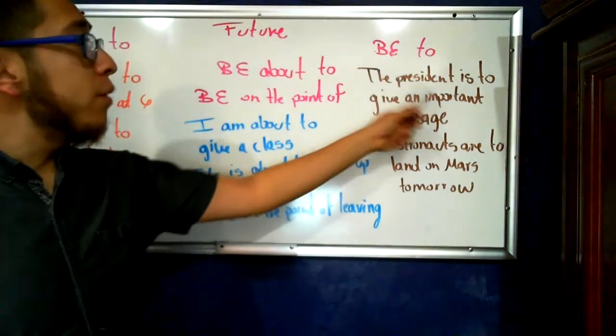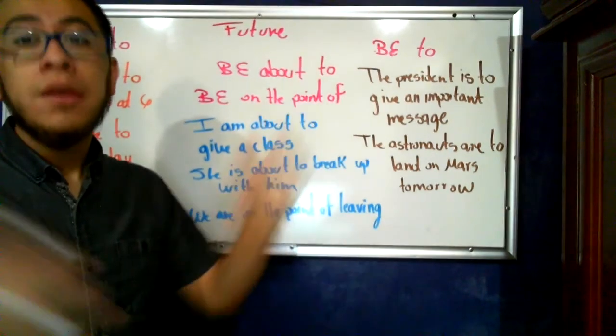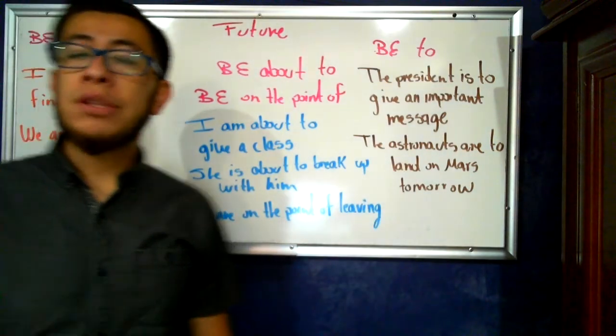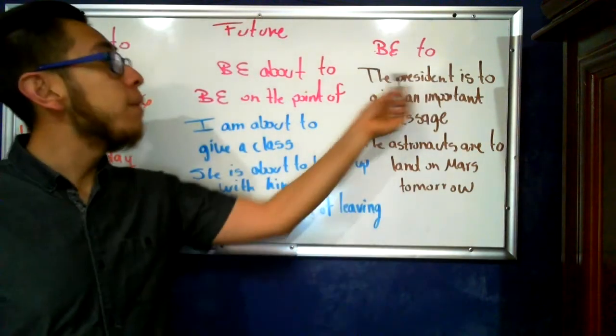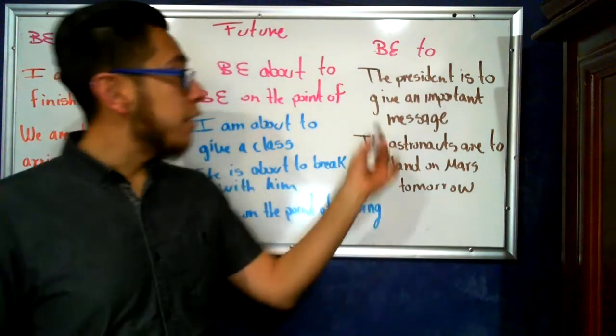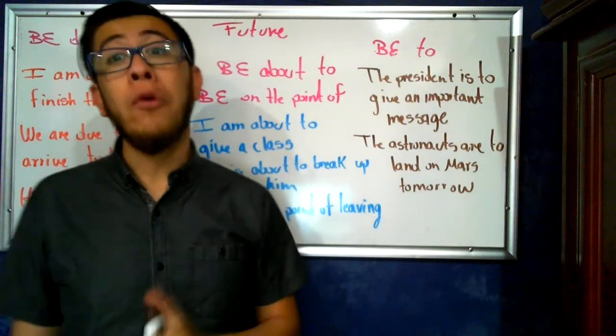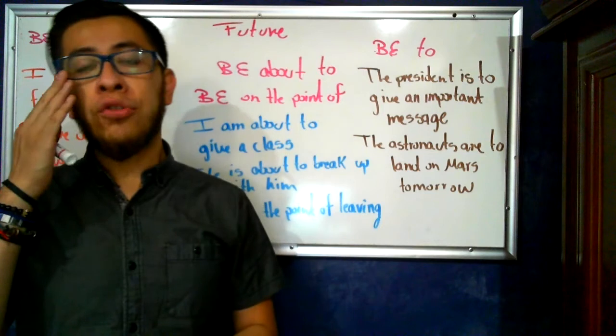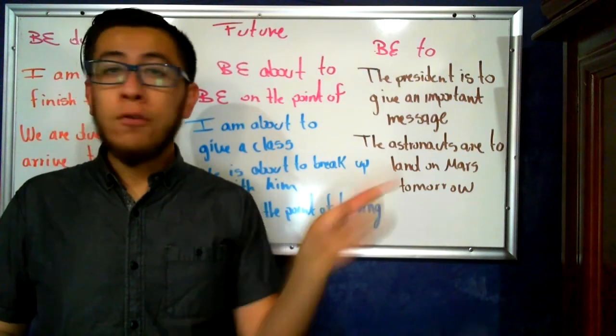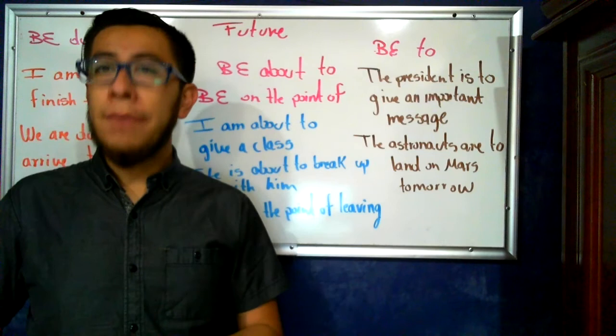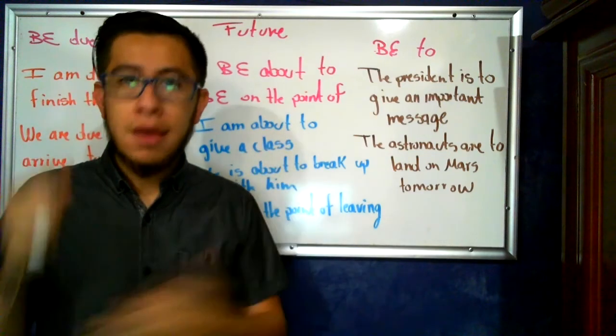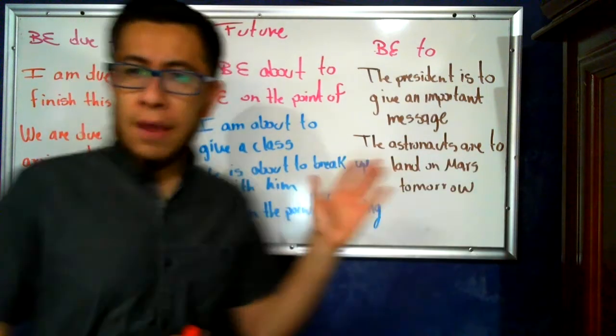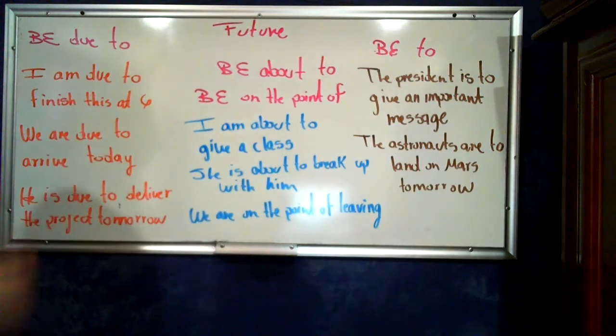For example, the president is to give an important message today. I have the verb be and the to and the normal verb. This indicates that the president will give an important message today. But look how it is. The president is to give an important message. The astronauts are to land on Mars tomorrow. Generally it's a very formal future. It's used in news, it's used in official protocols. It's not a very common future to use. It's always used for these very formal moments. But it's very simple. It's only the verb be, the to and a verb.